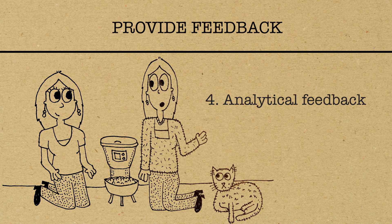And there's analytical feedback. This type of feedback provides learners with suggestions to help them correct their performance. In our example, this could be noting what your daughter has done right so far, and then asking some what-if questions.